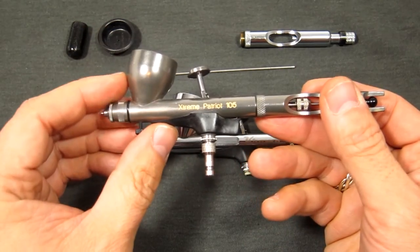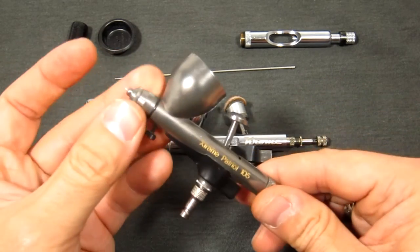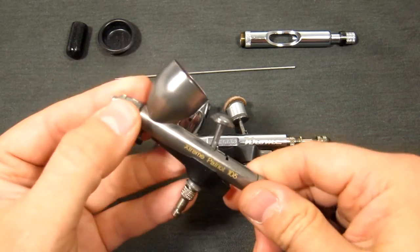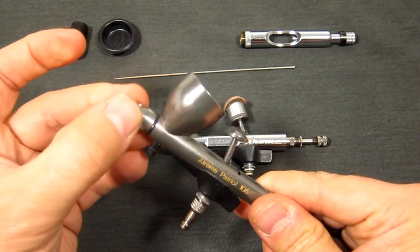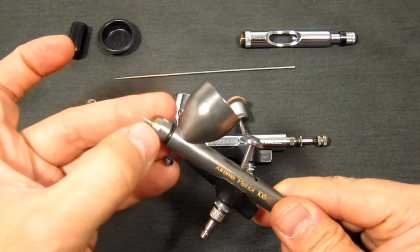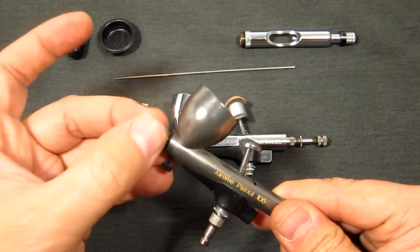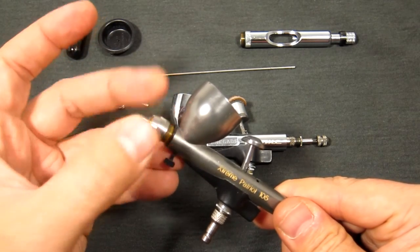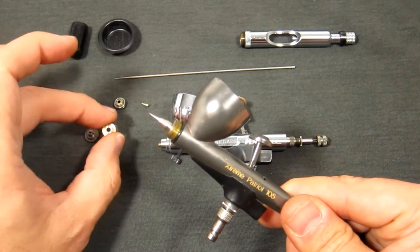Now just for information purposes, I'm going to take the Extreme Patriot 105 and I'm going to show you the corresponding pieces for the Patriot. This is the new Patriot, came out earlier this year 2016, and this is just to illustrate how much larger these pieces are for the Patriot series.